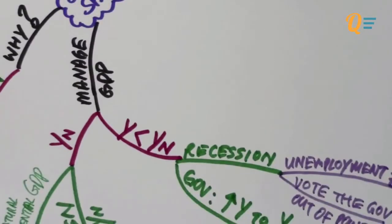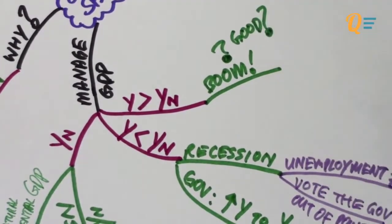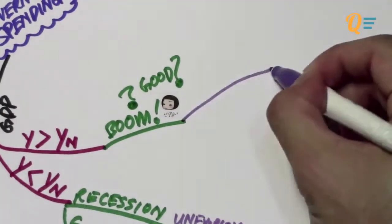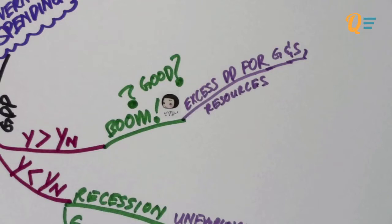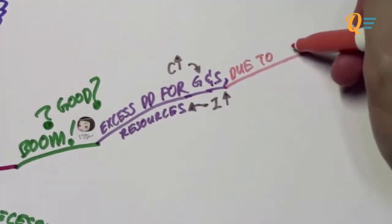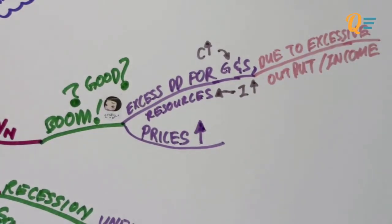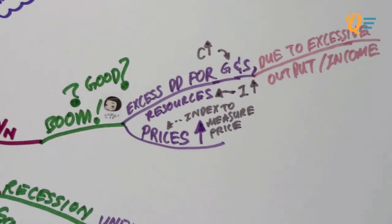On the flip side, when GDP is higher than the potential level, this is known as an economic boom. Although it may sound good, an economic boom might not always be positive. One reason is there will be excess demand for goods and services because people are wealthier and tend to spend more. There will also be excess demand for resources because firms are investing more and require more resources. This excess demand from increased consumption and investment causes prices to rise.